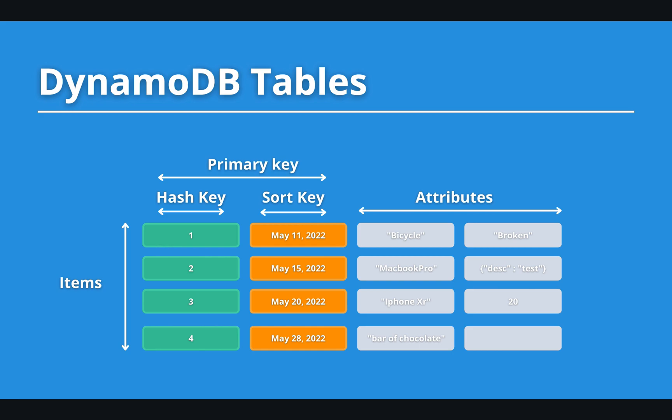DynamoDB has a flexible schema. You can see this when you look at the rest of the table. The rest of an item's properties are called attributes — they are optional, can have different data types, and can have different schemas. So in DynamoDB, you have a common way of identifying items, but the rest is up to you; you can create a variety of models.